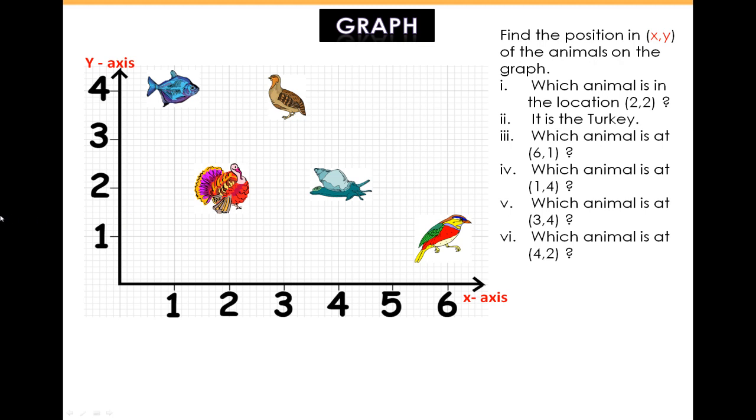So let's find some animals on the graph. Which animal is located at 2, 2? The turkey. Which animal is at 6, 1? The red and green bird.